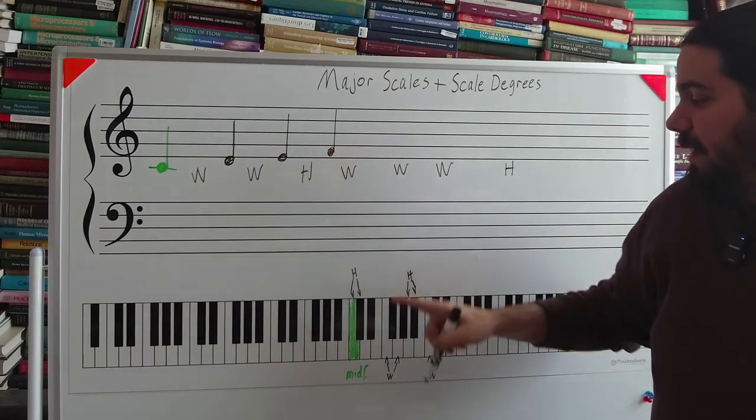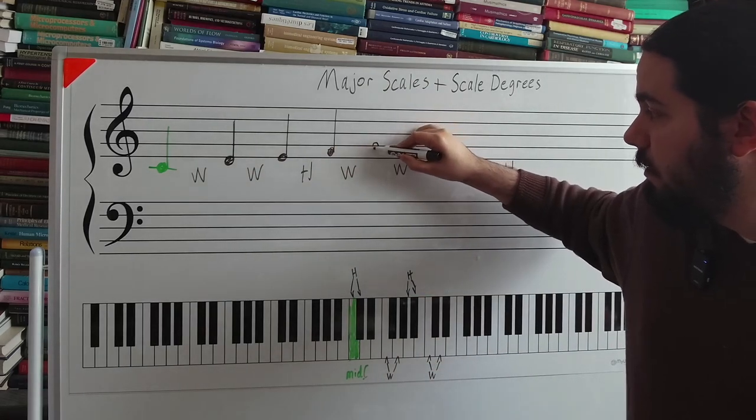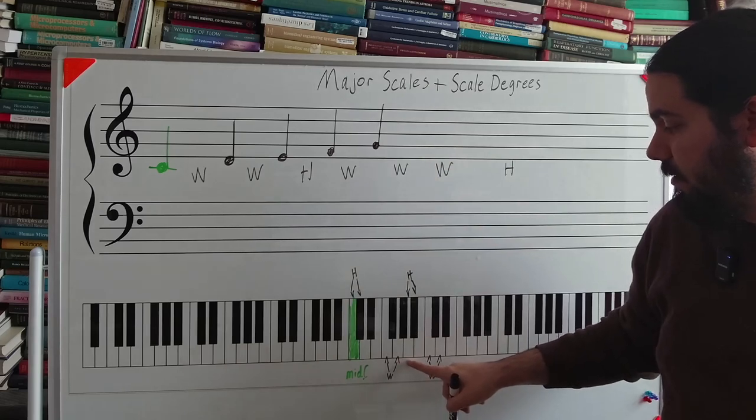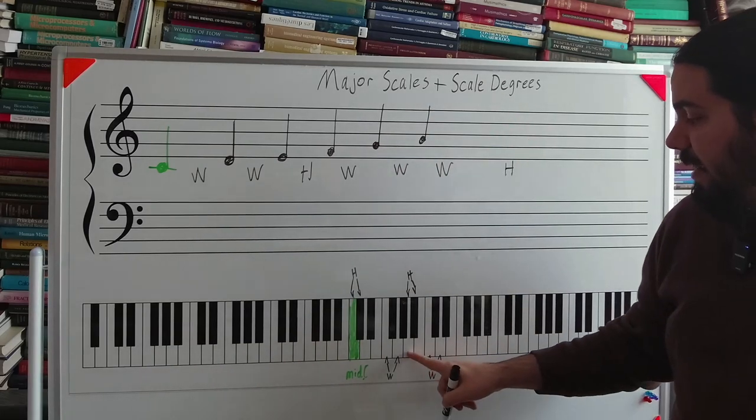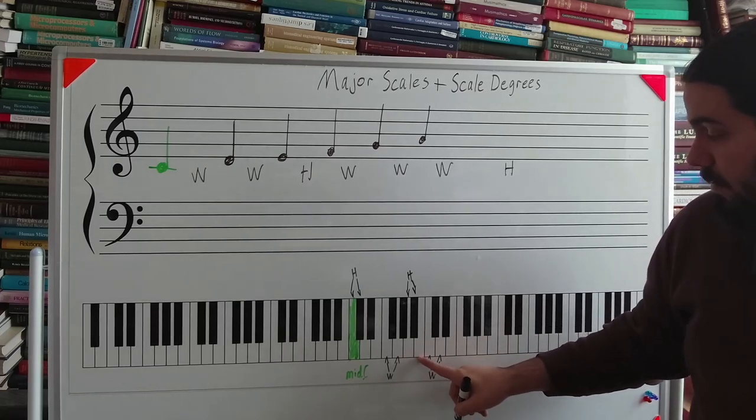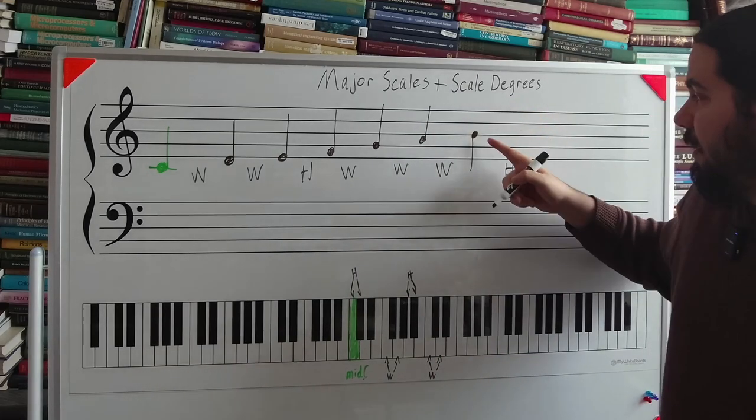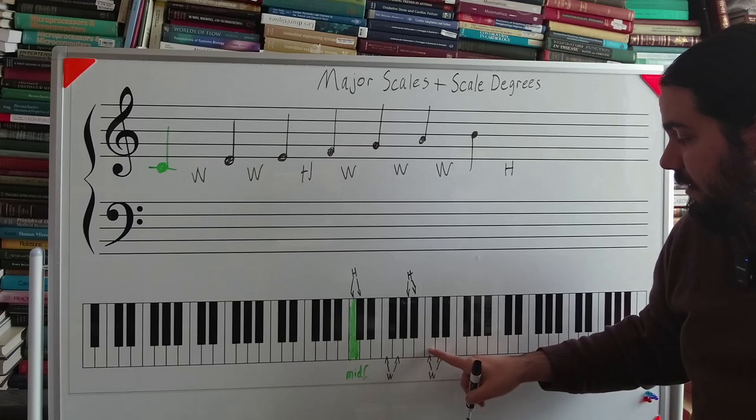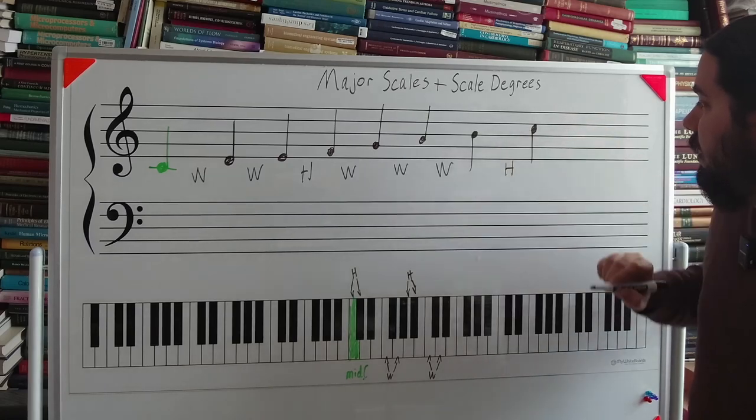Then we want a whole step up from F. In this case it would be G. Then a whole step up from G is A. Whole step up from A is B. And then we need one half step up from B. In this case it would be C, because again, B and C, they're touching each other on the keyboard. So that C would go right there.